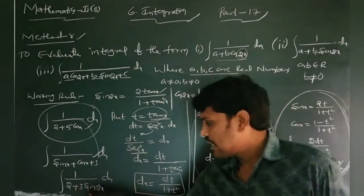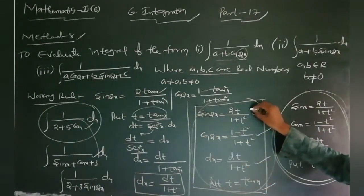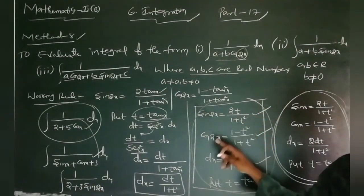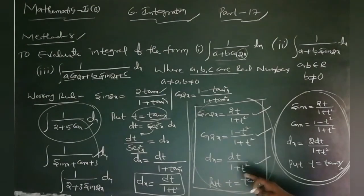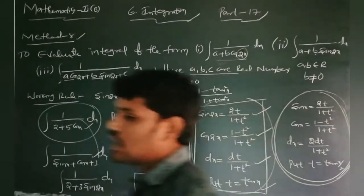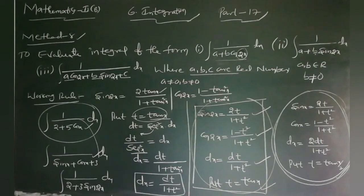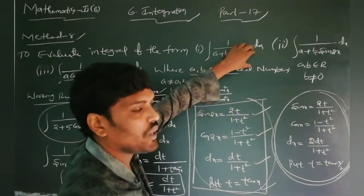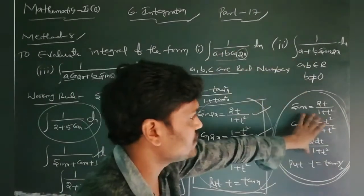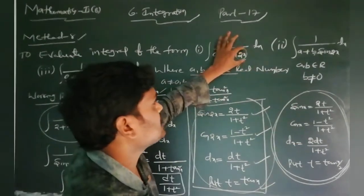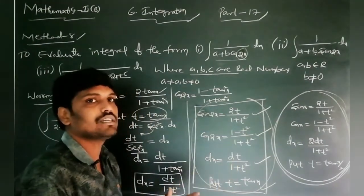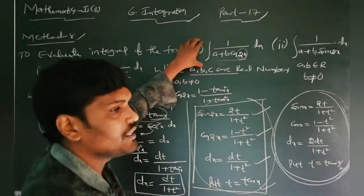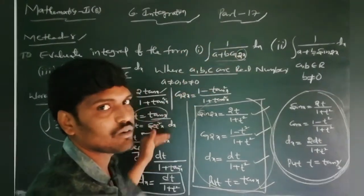For examples with angle in terms of 2x, use the working rule: sin 2x = 2t/(1+t²), cos 2x = (1-t²)/(1+t²), dx = dt/(1+t²), and t = tan x. This is Method i. Method i has two parts — one for cosine/sine ratios with angle x, and one for angle 2x — each with its corresponding working rule.